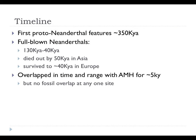Looking at the fossil record, the first proto-Neanderthal features appear around 350,000 years ago, with full-blown Neanderthals dating from around 130,000 to about 40,000 years ago. Ideas that they survived to 26,000 years ago in Spain have been abandoned. They overlap with anatomically modern humans in time and range in Europe for perhaps about 5,000 years, though no site has been found with both Neanderthal and modern human remains right next to each other.